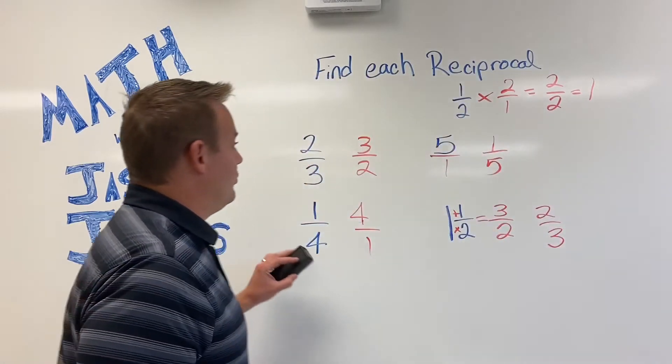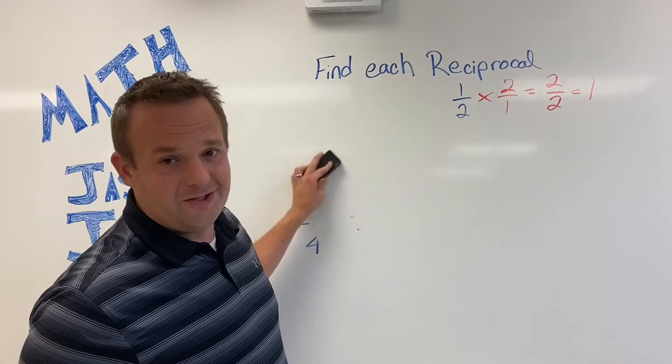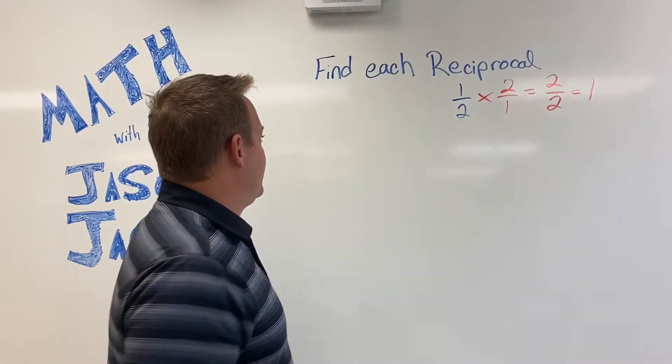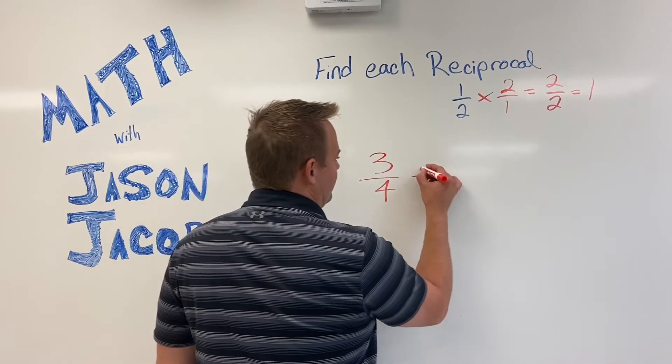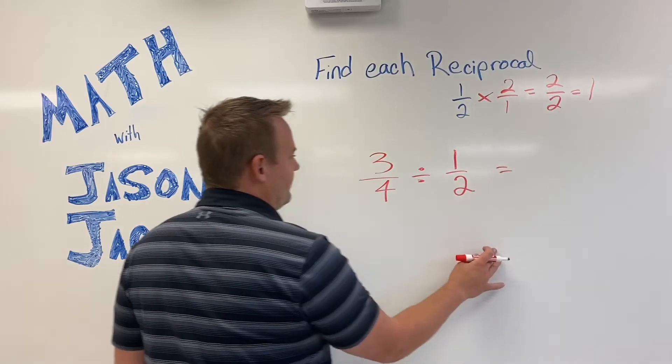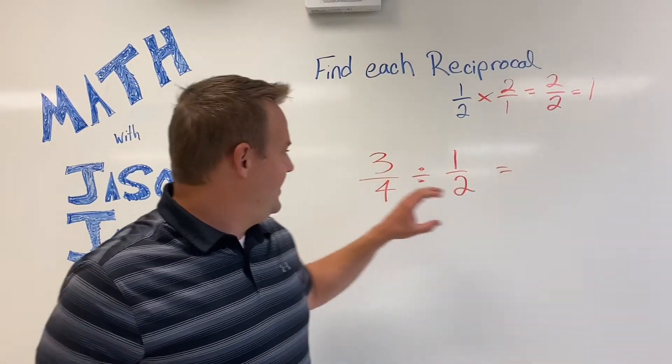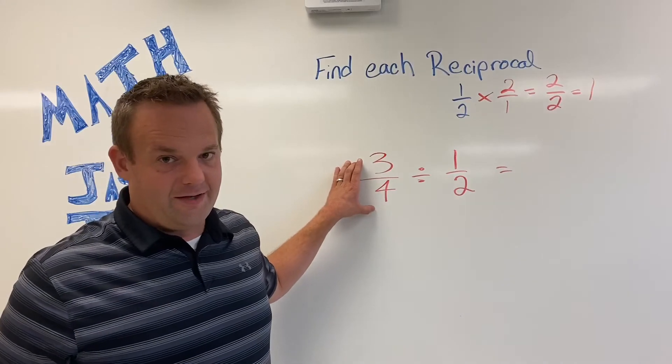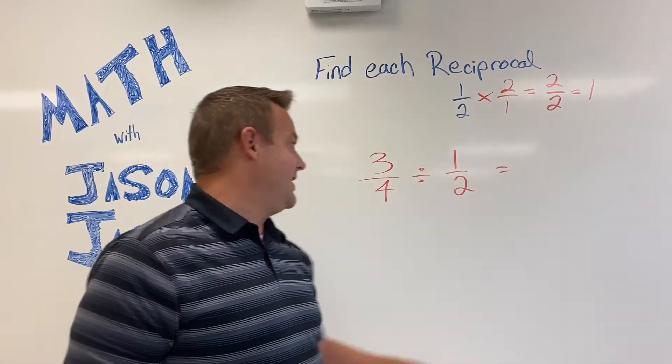Why is this important? Well, with dividing fractions, I'll just give you a quick example. So, three fourths divided by one half. When you're dividing fractions, dividend, divisor, quotient. Dividend is the fraction being divided or the number being divided. Divisor is doing the dividing and the quotient is the answer to the division problem.